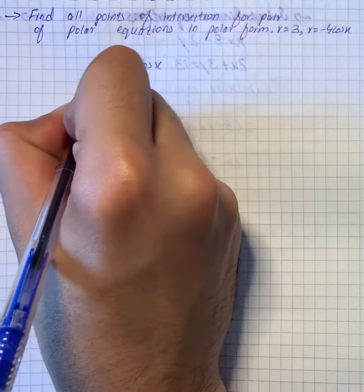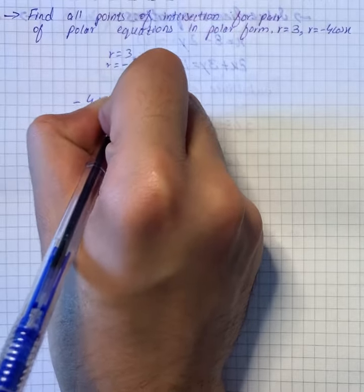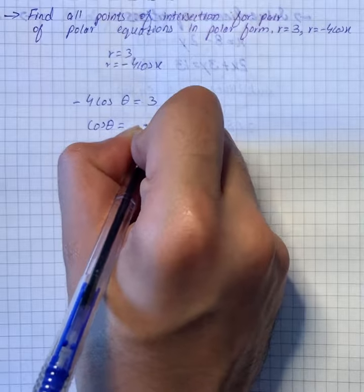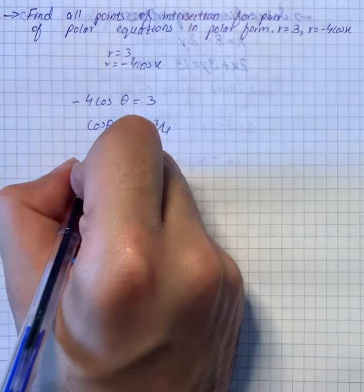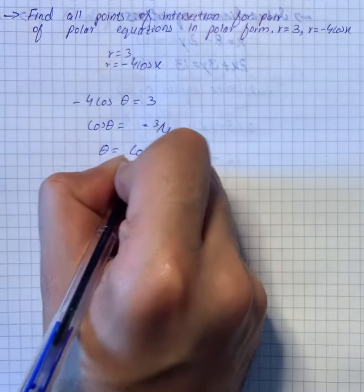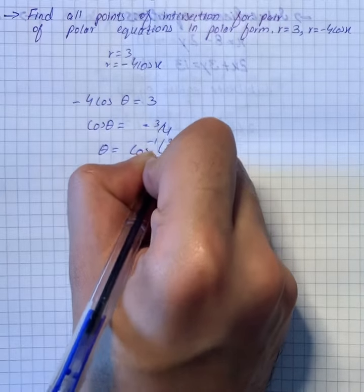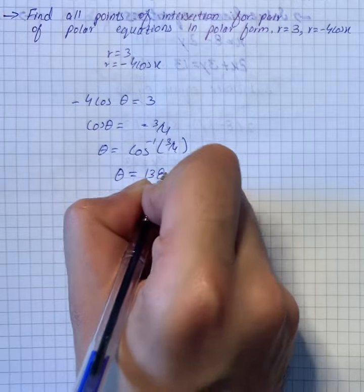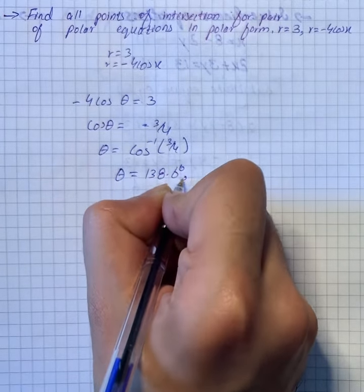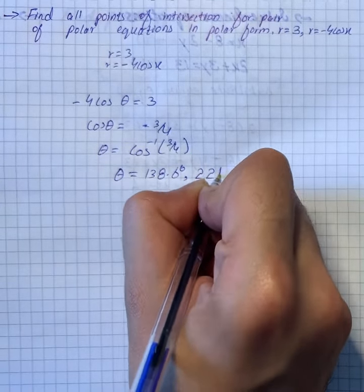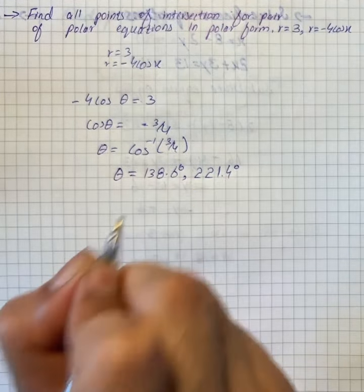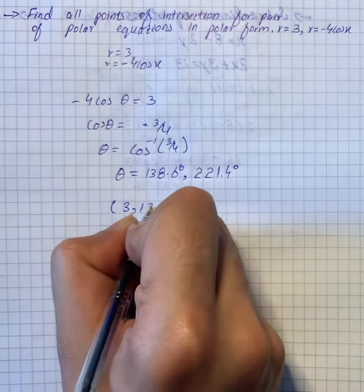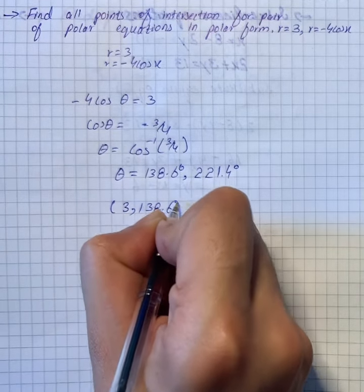To find the points of intersection of the given polar equations, we set minus 4 cos theta equal to 3, so cos theta equals minus 3 by 4. Therefore theta equals cos inverse of minus 3 by 4, which gives us 138.6 degrees and 221.4 degrees.